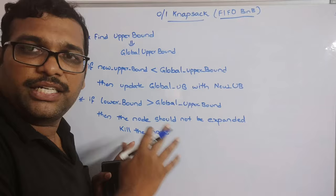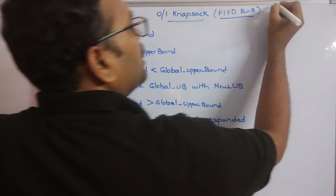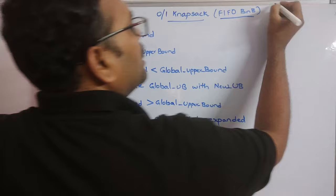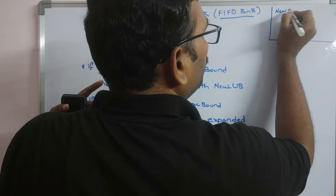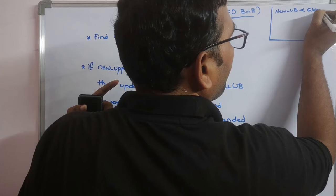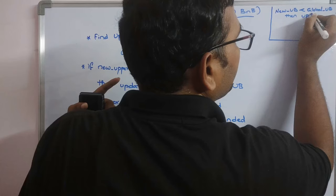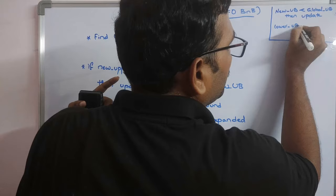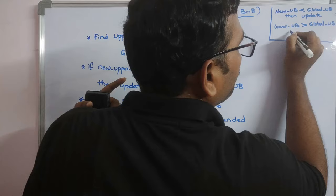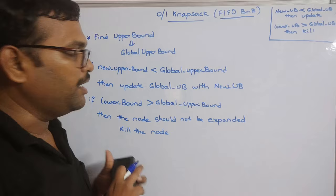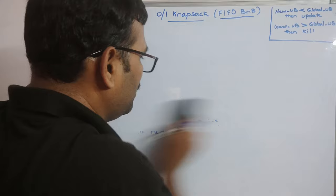Remember these conditions. We'll take the same problem from our previous session. To summarize: new upper bound less than global upper bound → update; lower bound greater than global upper bound → kill. These are the two conditions to remember. Now we'll see the problem and find the state space tree by calculating the lower bound and upper bound values.